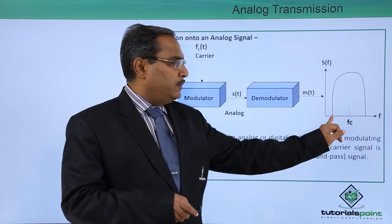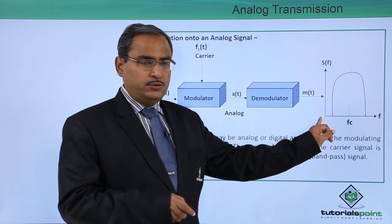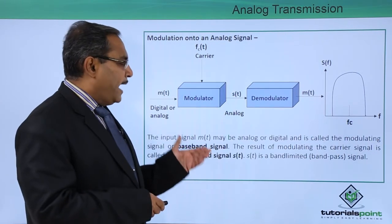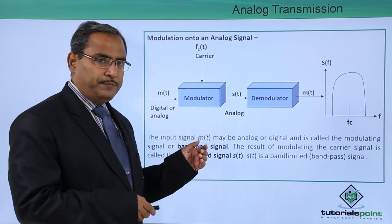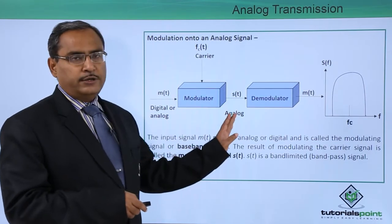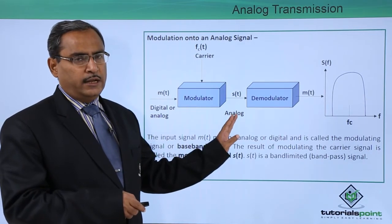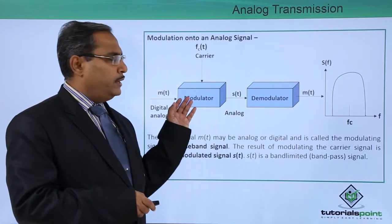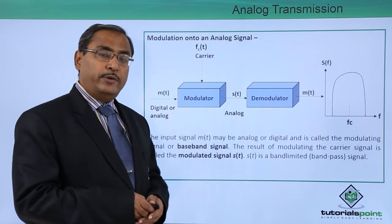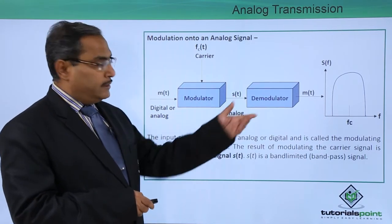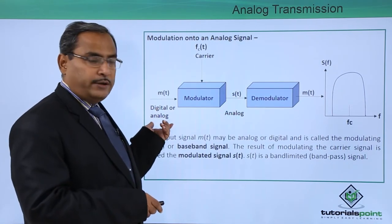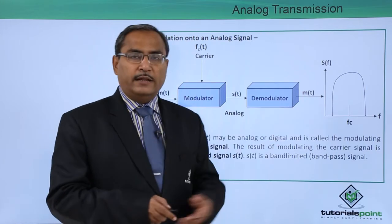Below this particular frequency there is no energy and above this particular frequency there is no energy. This is our analog transmission, and in this way from digital or analog data I can easily convert it to the respective analog signal. At the sender part we will be requiring a modulator with the carrier frequency as input. At the receiving end we will be requiring the demodulator, and then the analog or digital data that was supposed to be transmitted will be reformed at the receiving end.